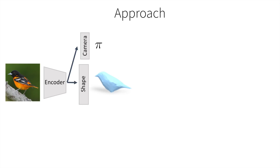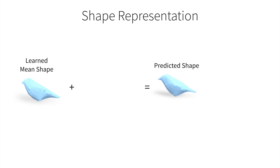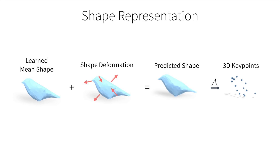The second output is the 3D shape of the object. The shape is parameterized as a category-specific morphable model, where a learned category-level mean shape combined with instance-specific predicted deformations instantiate the 3D shape. A benefit of this common category-level representation is that we can learn to associate semantic keypoints with the mesh vertices and also obtain 3D keypoint locations from a predicted shape.